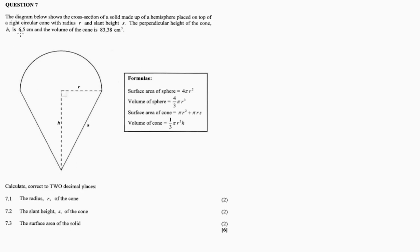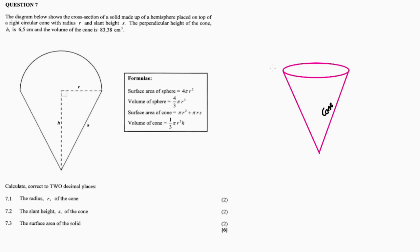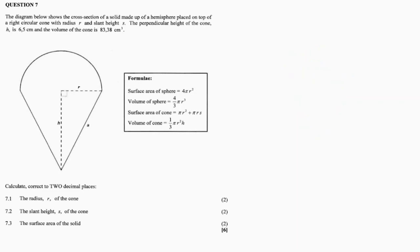The perpendicular height of the cone, h, is 6.5 and the volume of the cone is 83.38. The cone is the shape, and when you cut through it you only see the cross section. There's also the sphere — which is half of a full sphere, called a hemisphere.